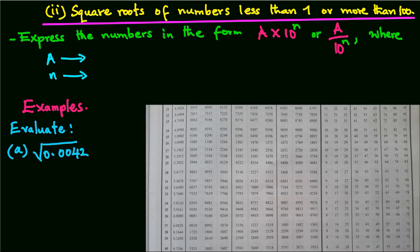Square roots of numbers less than 1 or more than 100. In order to evaluate square roots of numbers less than 1 or more than 100, we express the numbers in the form of A times 10 power n.